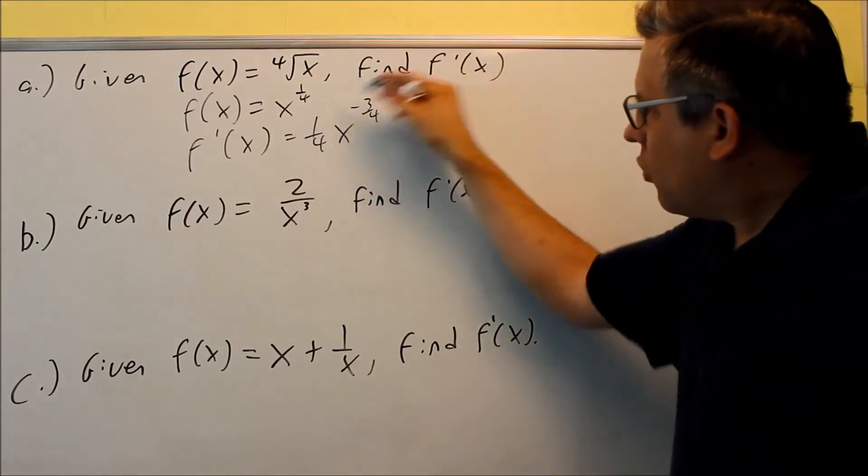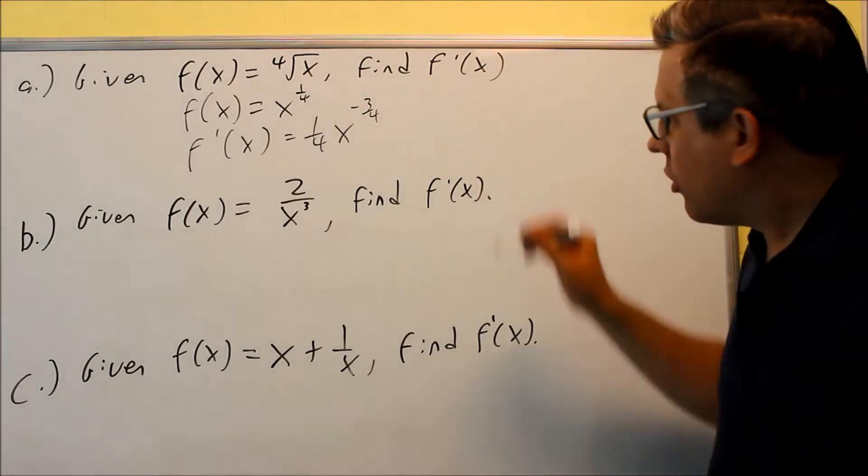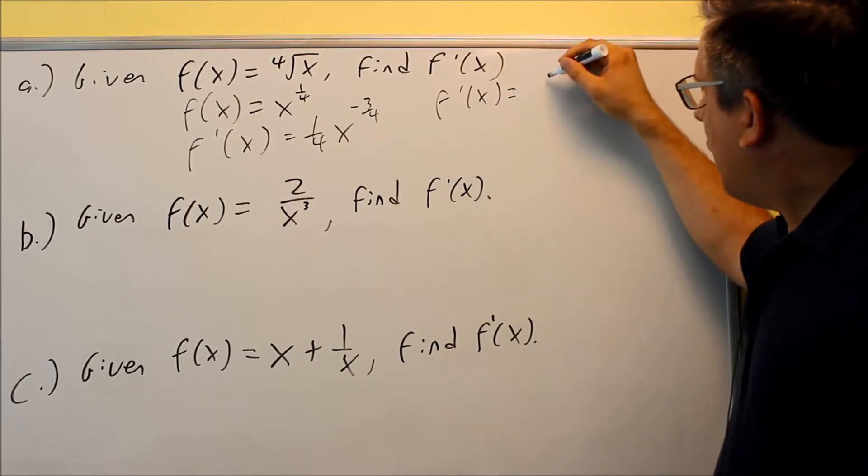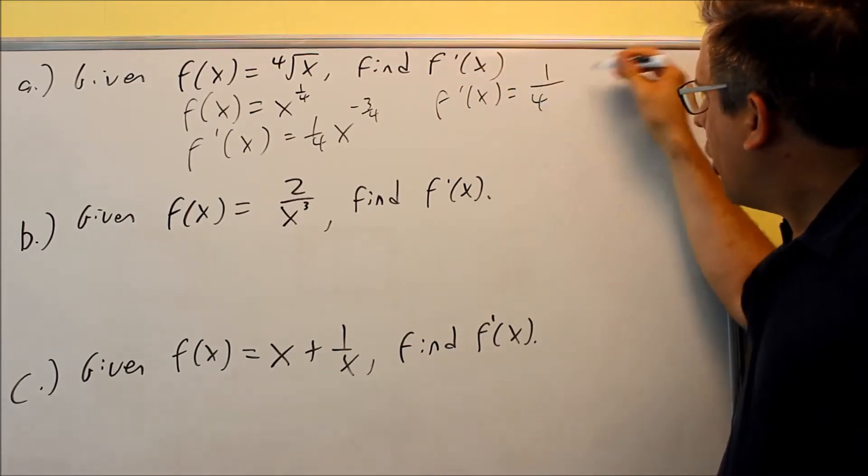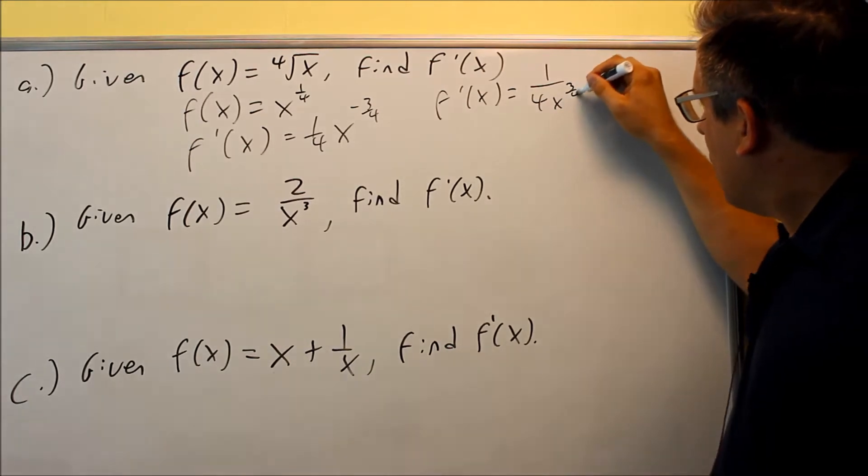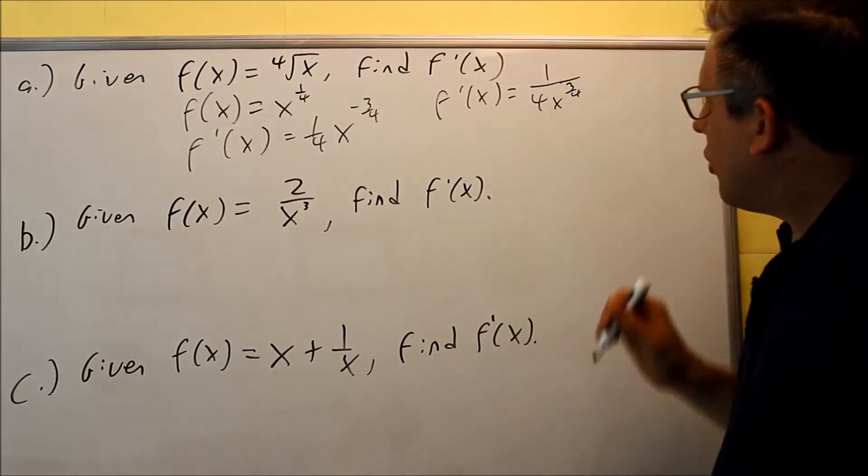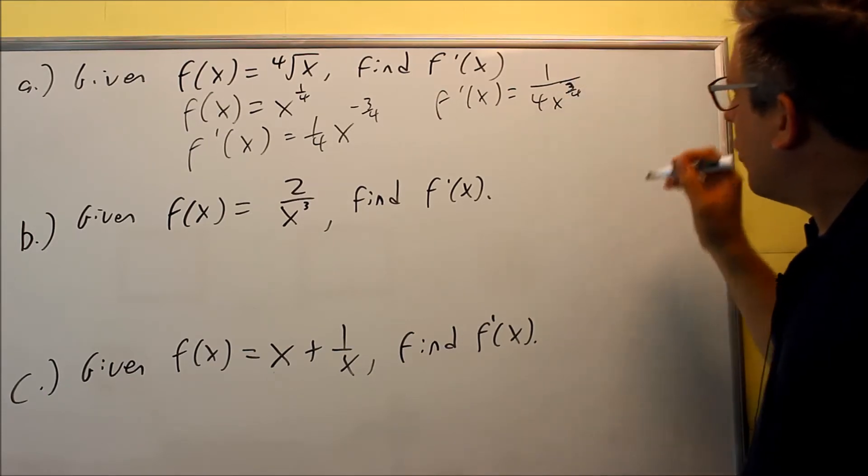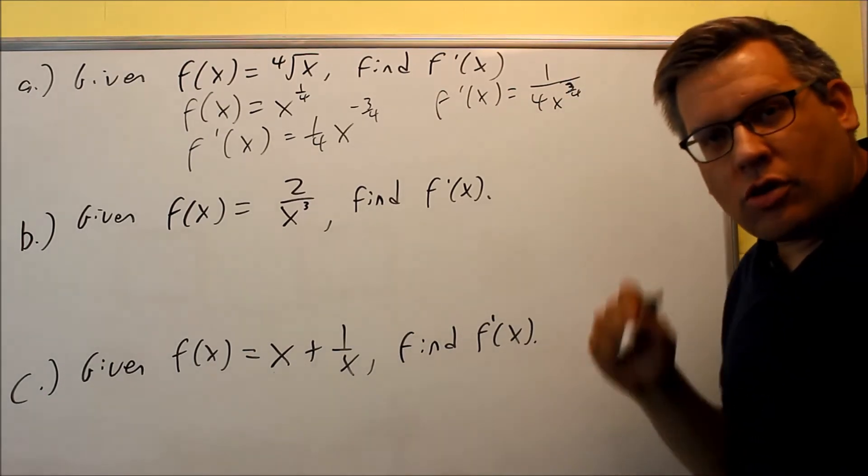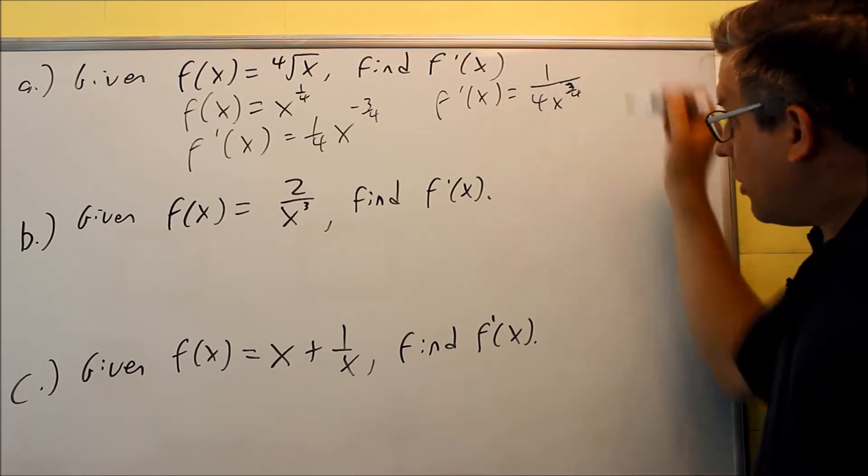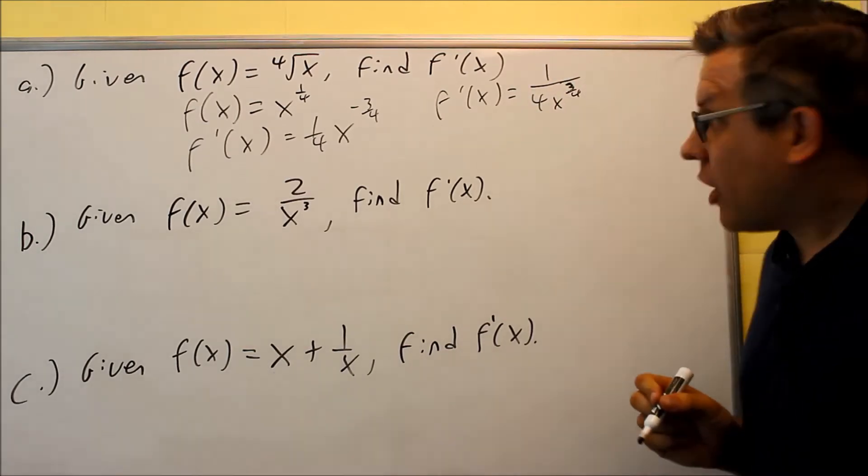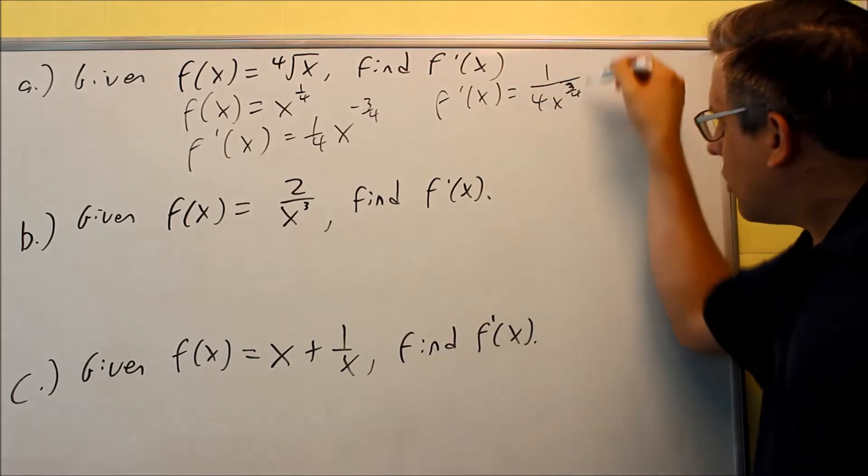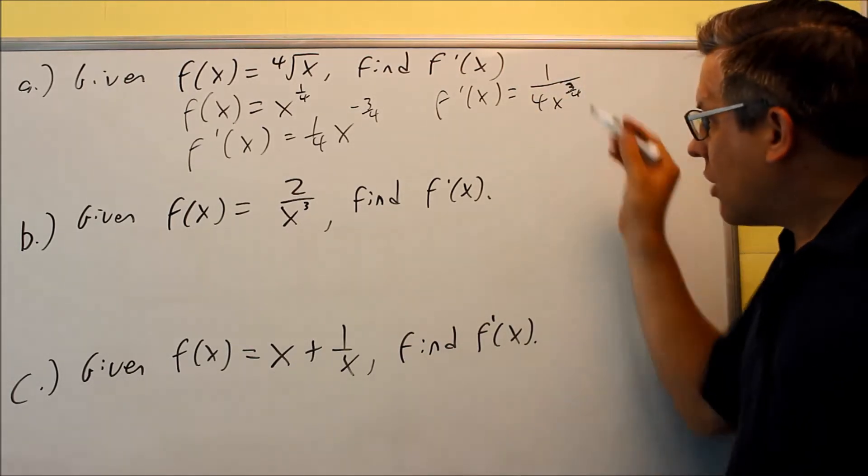Now if you don't want to have a negative power, we can change that. So I'm going to rewrite that. I have 1 on top, 4, and then I'll put x to the 3/4ths down below. And you can either leave it as a 3/4ths power, or if you'd like to change it back into a radical, you could do that as well, but I'm just going to leave it here as a rational power. So as long as you get rid of the negative exponents, that's the main thing. You can leave your answer there as a rational power.